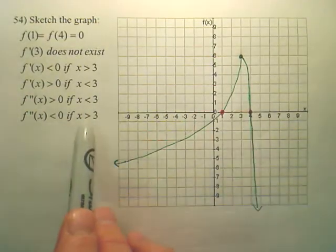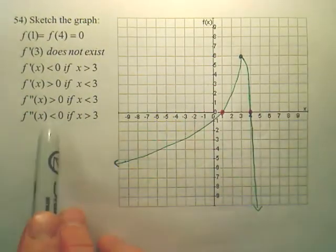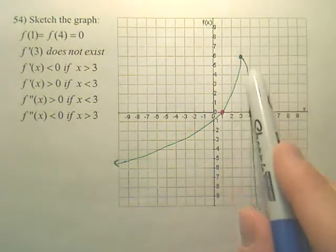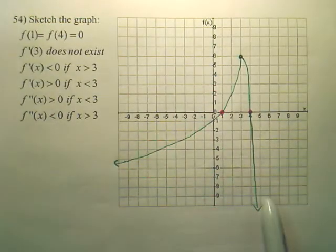And from the side greater than 3, from this value over, it's less than 0, which is negative, which means it's concave down. So from this value over, you can see a frown, part of a frown.